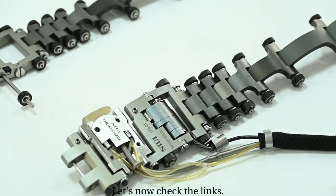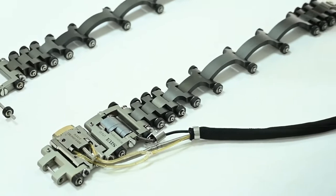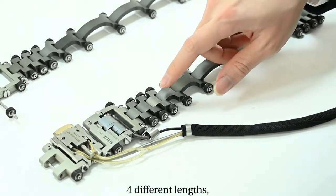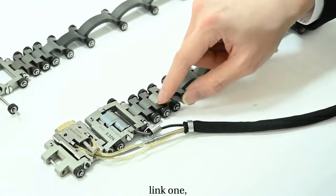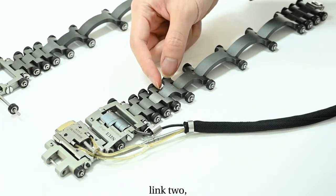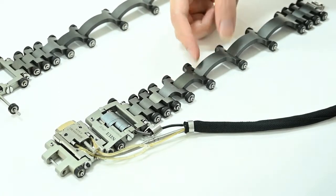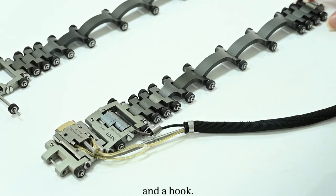Let's now check the links. There are links with four different lengths: Link 1, Link 2, Link 3, and Link 4, and a hook.